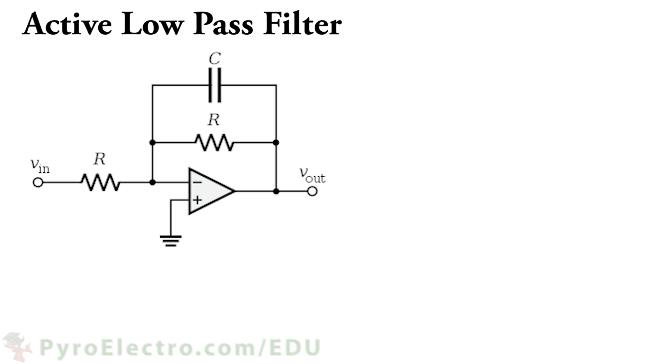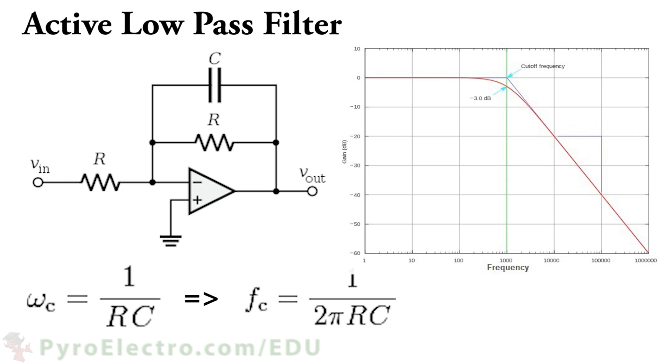The formula to know where the cutoff frequency is for this active low-pass filter looks like this. And the graph that shows which frequencies will make it through the filter unaltered will actually look strikingly similar as you can see.